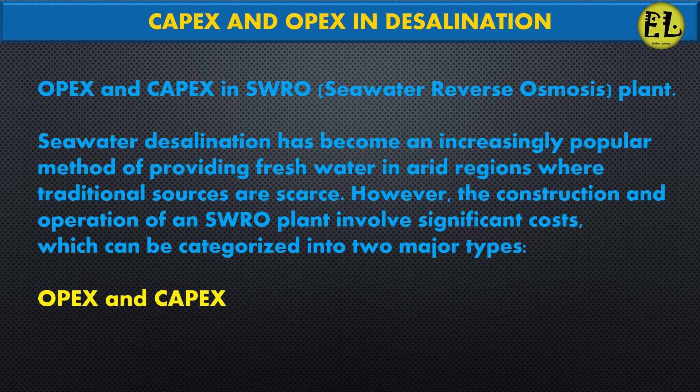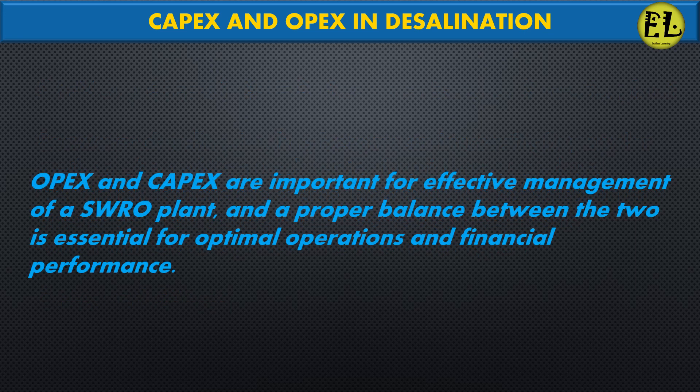Seawater desalination has become an increasingly popular method of providing fresh water in arid regions where traditional sources are scarce. However, the construction and operation of an SWRO plant involves significant costs, which can be categorized into two major types: opex and capex. Opex and capex are important for effective management of a SWRO plant, and a proper balance between the two is essential for optimal operations and financial performance.